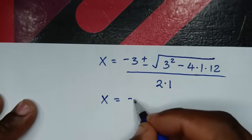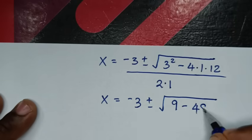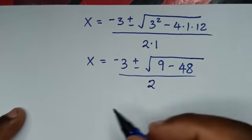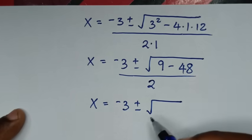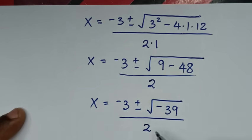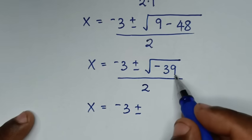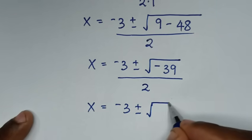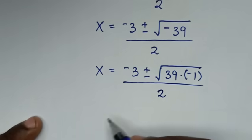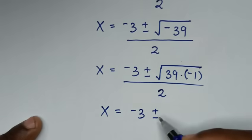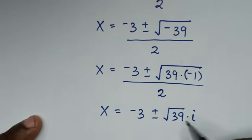Applying the quadratic formula x equals (negative b ± √(b² minus 4ac)) over 2a: x equals (negative 3 ± √(9 minus 48)) over 2, which gives x equals (negative 3 ± √(minus 39)) over 2. Since √(minus 39) equals √39 times i, we get x equals (negative 3 ± √39 · i) over 2.